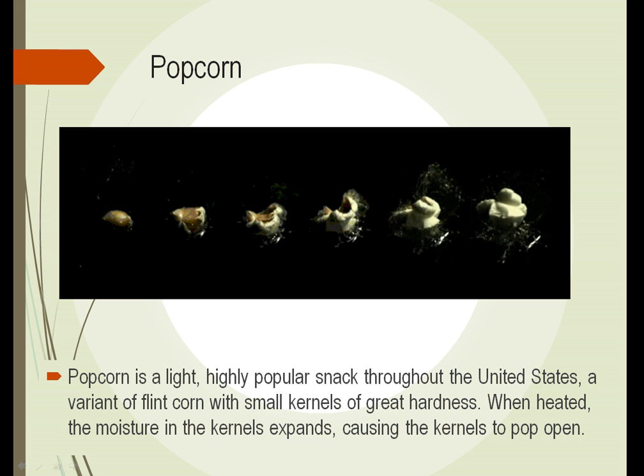Popcorn is a variety of flint corn with no dent in the top, and it contains a small amount of moisture even after drying and maturing. When heated to a certain temperature — basically the boiling point of water, 212 degrees Fahrenheit — that water is converted to steam. When water changes to steam, it expands in size 15 times, and that's what causes the popcorn to split open, pop, and expand.